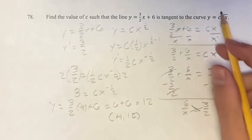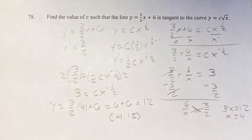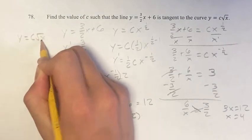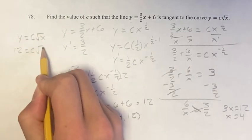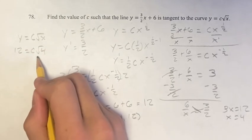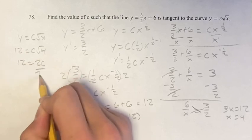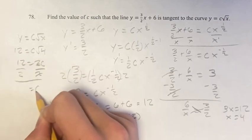Now we can find c, because we know that the point 4, 12 is on this curve, just like it's on the line. We can plug in x and y to solve for c. So we have 12 equals c root 4. Root 4 is 2, so 2c. Dividing by 2 on both sides, we get c equals 6.